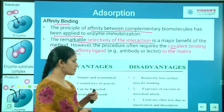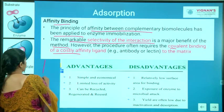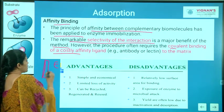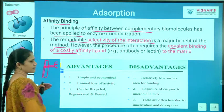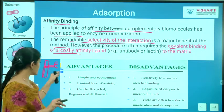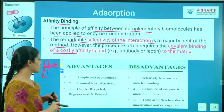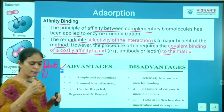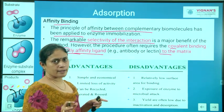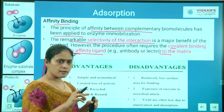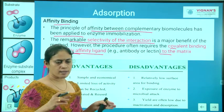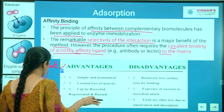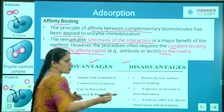In affinity binding, a support and enzyme are available. In order to bind them, one ligand is inserted between them. With the help of this ligand, the enzyme gets bound to the support molecule. On one side the ligand binds to the matrix, and on the other side it binds to the enzyme. This process requires a costly covalent affinity ligand molecule.